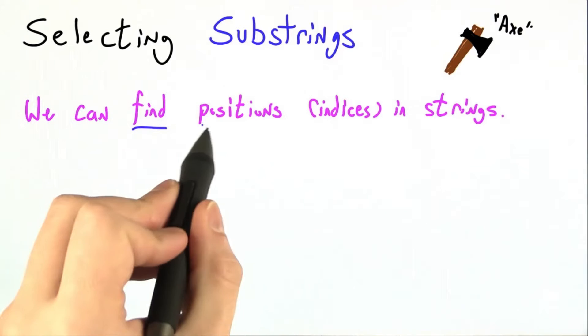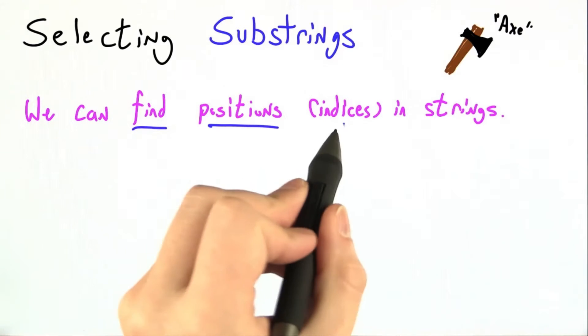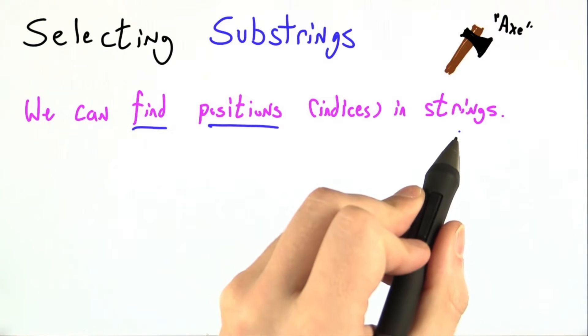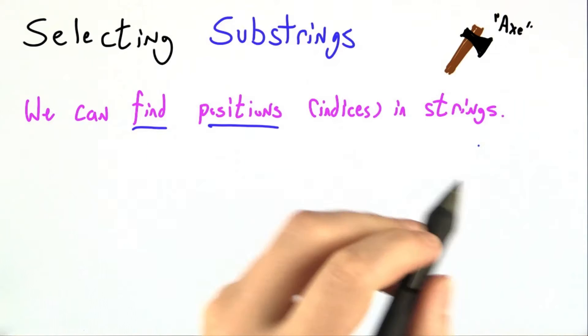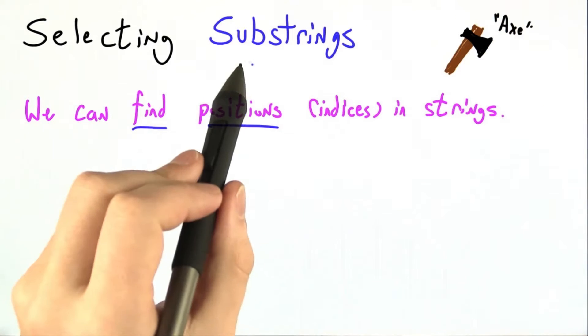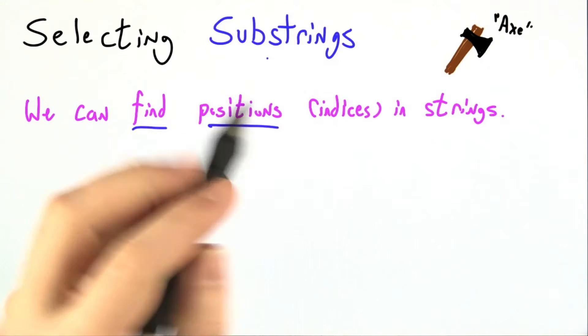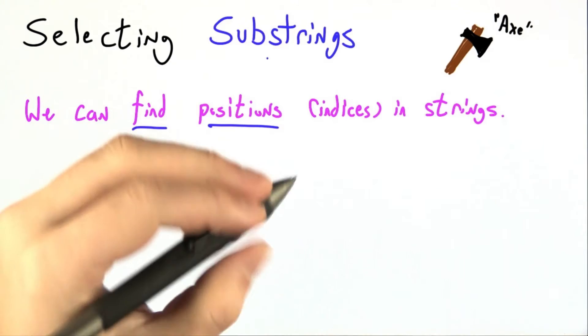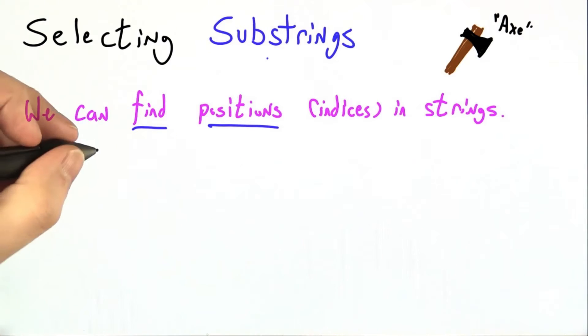So now we know how to find positions, sometimes called indices, in strings. And what we want to do is chop up those strings into substrings. Once I know where the spaces are, I can start splitting a sentence into words.